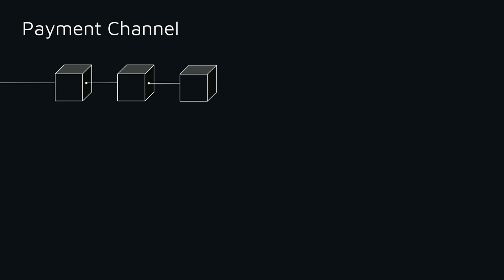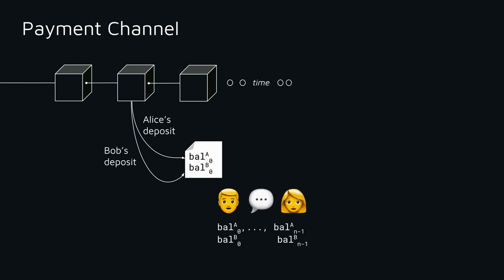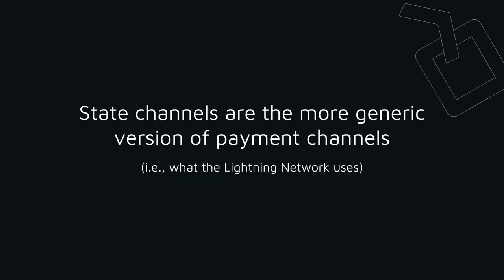For those not familiar with channels: the core construct is taking payments that you can send between users off-chain. Alice and Bob send a deposit into a multi-signature wallet, and during the time the channel is open they can transact back and forth without ever going back to chain. Whenever they're ready, they settle back on-chain with the updated state. The only two transactions required are a deposit and a withdrawal.